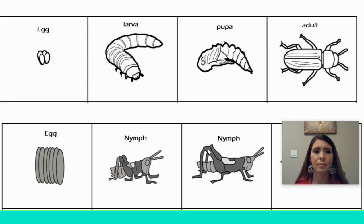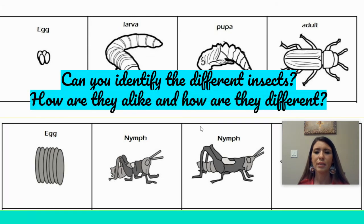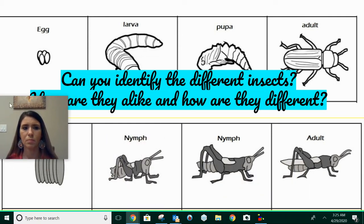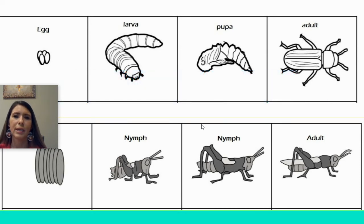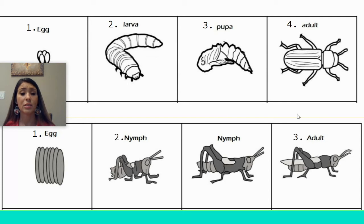So to recap and review what we've discussed today, let's look. Can you identify the different insects? How are they alike and how are they different? The insect on top has four stages. The insect on bottom — how many stages does it have? It actually has three stages.